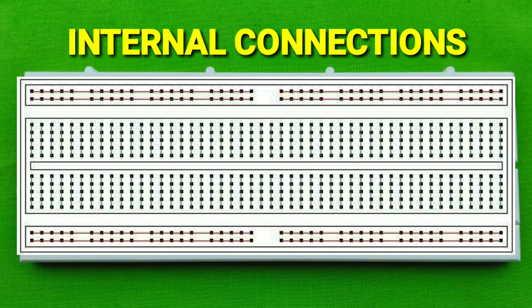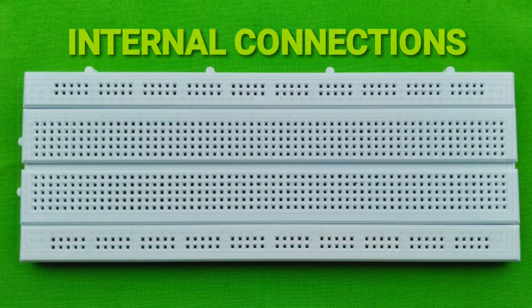The area between these two rails is called the circuit area. It is connected horizontally and is marked as A, B, C, D, E, F, G, H, I, J. The internal connections of the breadboard are also shown here. Thanks for watching, and also share with your friends.